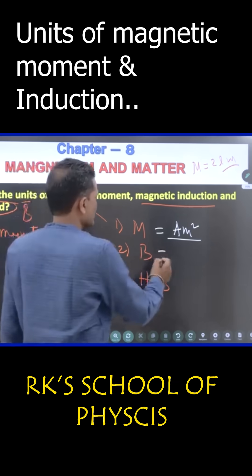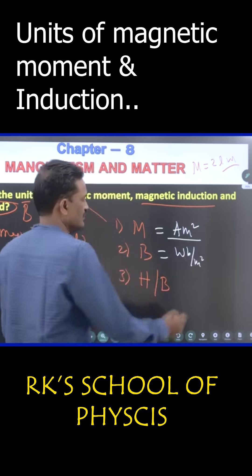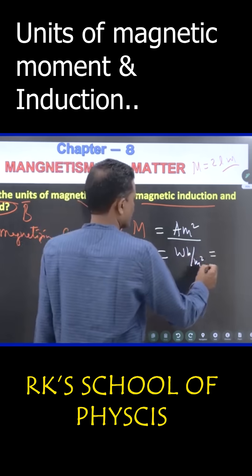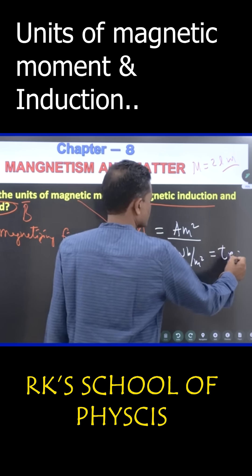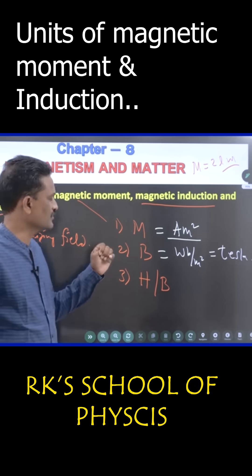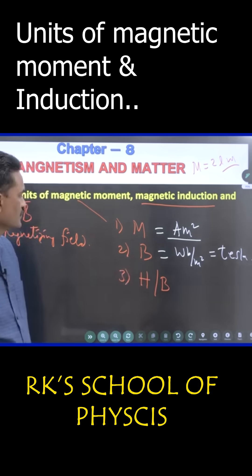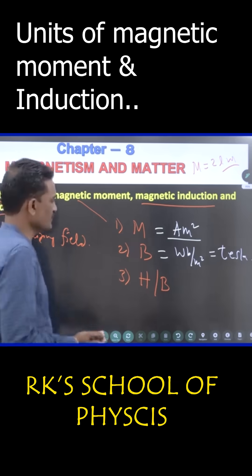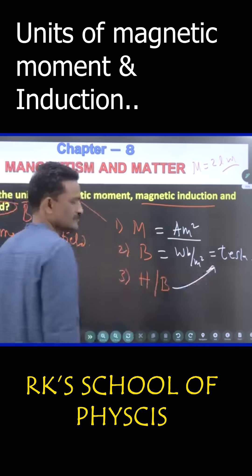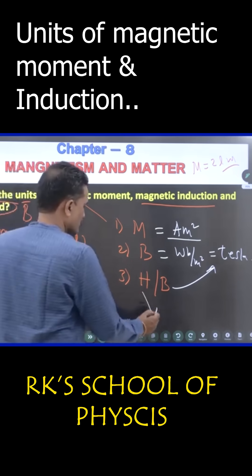This is Weber per meter square, or another unit is Tesla. Weber per meter square is called as Tesla. You can write either Weber per meter square or Tesla, will be given two marks. Third one, if it is B, the answer is same. If it had been magnetizing field, the answer would have been ampere per meter.